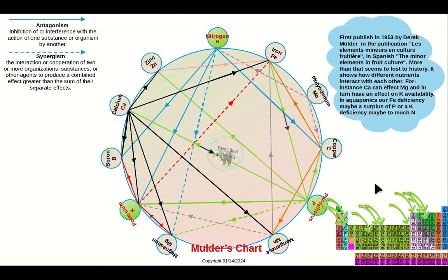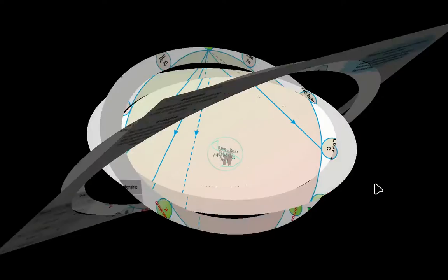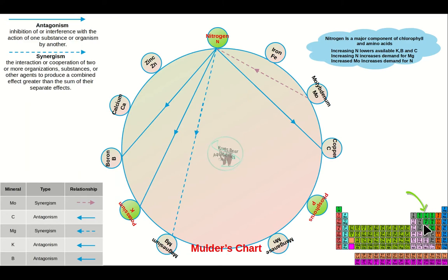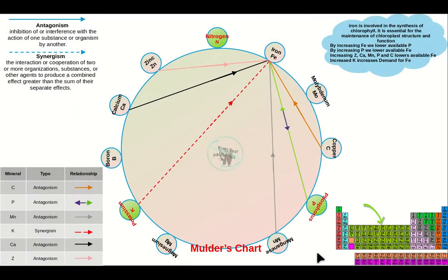Let's break this chart down. Nitrogen — if you haven't seen my nitrogen cycling video, check it out, I'll put a link up here — is one of the major components in chlorophyll and amino acids. Increasing nitrogen lowers the amount of available potassium, boron, and copper, while creating a demand for magnesium. Increasing magnesium in turn creates demand for more nitrogen. Nitrogen is number 7 on the periodic table.